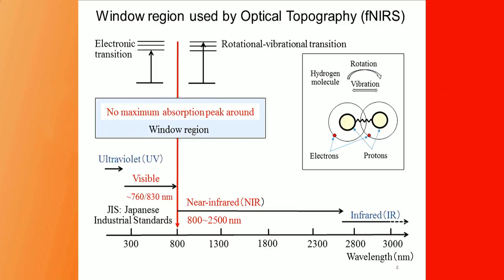This wavelength range sits between electronic transitions and rotational-vibrational transitions. The Japanese industrial standards define the visible region as up to 760 or 830 nanometers, because visibility depends on the individual. Usually, we use wavelengths within this visible region.